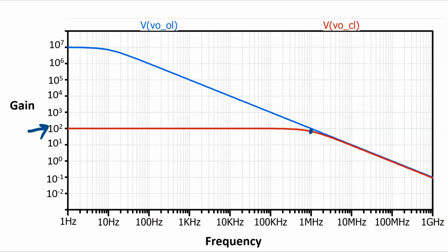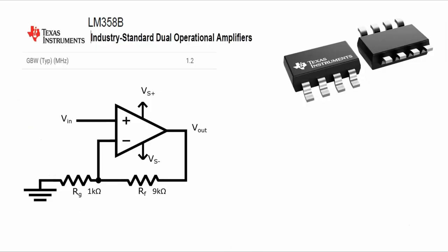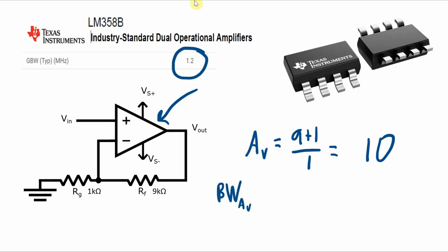So the gain bandwidth product is useful for helping you predict the bandwidth of a transvoltage amplifier that you've designed, or for selecting an appropriate op amp with a gain bandwidth product sufficient to give you the bandwidth that you need. So let's take a look at a couple of examples to better see what I mean. So here we have a non-inverting amplifier configuration. We've got one of these LM358B op amps here, and the gain of our circuit is 10. From the data sheet, I found that the gain bandwidth product of this particular op amp is 1.2 megahertz. So that means the bandwidth when the gain is 10 is that gain bandwidth product divided by the gain for this particular circuit. So the bandwidth for this particular circuit is 120 kilohertz.